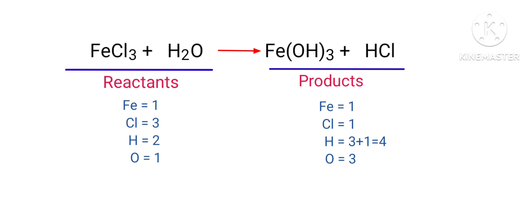In this equation, we need to balance the chlorine atoms first. To do this, we need to put a coefficient of three in front of HCl. The chlorine atoms are balanced.